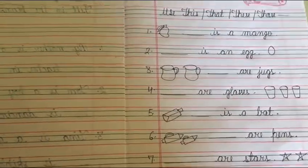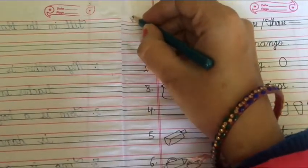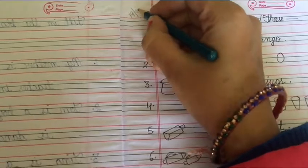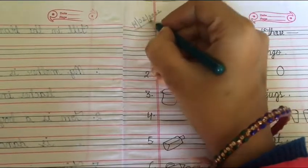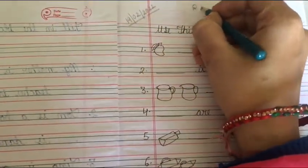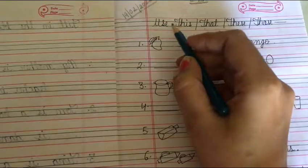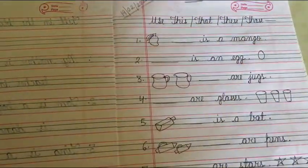Let's start. First of all, you will write the date, today's date: 19th February 2022. Here you will write R.W. (revision work): Use this, that, these, those in the blanks.